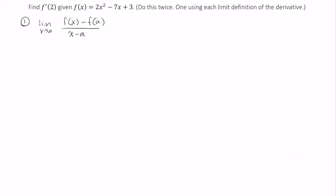In this case a is equal to 2, so this becomes the limit as x approaches 2 of f of x minus f of 2 over x minus 2. As an aside, f of 2 is going to equal 2 times 2 squared minus 7 times 2 plus 3, which is just negative 3.